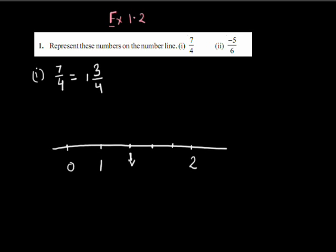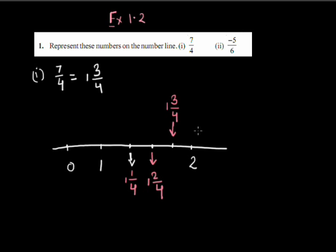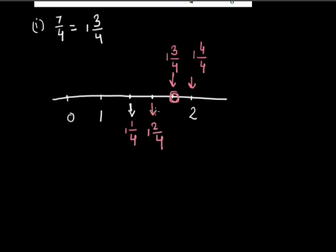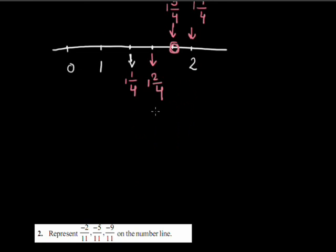The first part can be written as 1¼, or the 1/4th part of 1. The second point can be written as 1 2/4. The third point as 1¾, or 3/4th part of 1. The last point, 1 4/4, is 2. So this is the point 1¾.